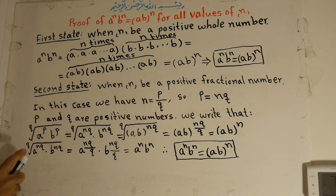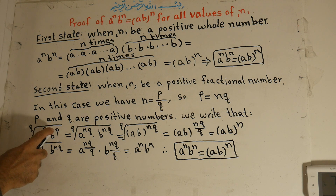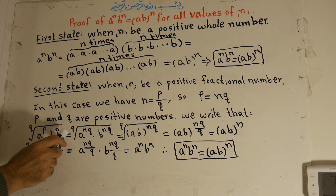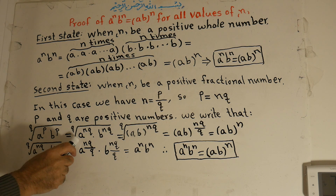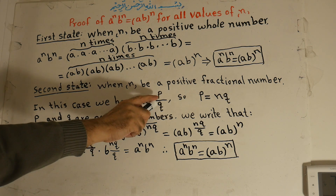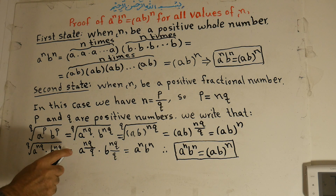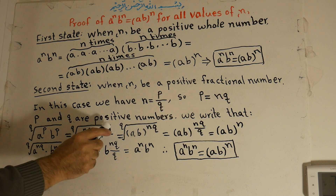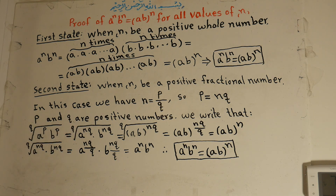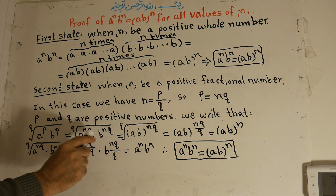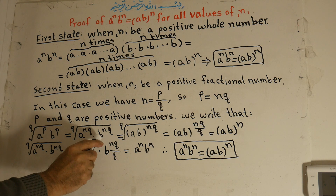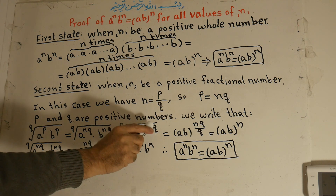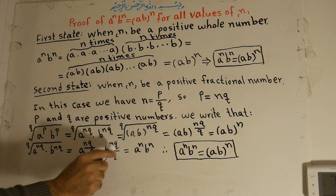We write that a to the power of p times b to the power of p, under the q-th root, is equal to a to the power of nq — since p equals nq — times b to the power of nq, under the q-th root, which equals ab all to the power of nq, under the q-th root.